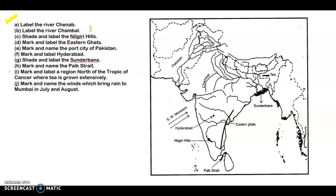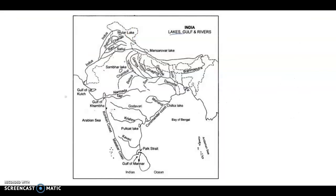I've given you some questions and the answers — try to do these questions yourself and tell me your score. I've provided you with a map of lakes, gulfs, and rivers — just have a look. You can learn these rivers using mnemonics or tricks. For example, Yamuna, Ganga, Gomti, Ghaghra, Gandak — you can make a story. I usually make stories as mnemonics. For peninsular rivers: Mahanadi, Godavari, Krishna, Kaveri — and you can see Krishna is also the name of a god, so learn it like that.